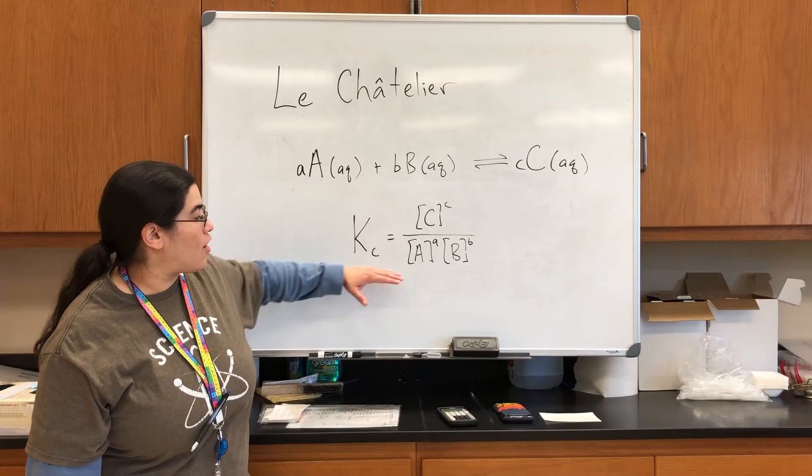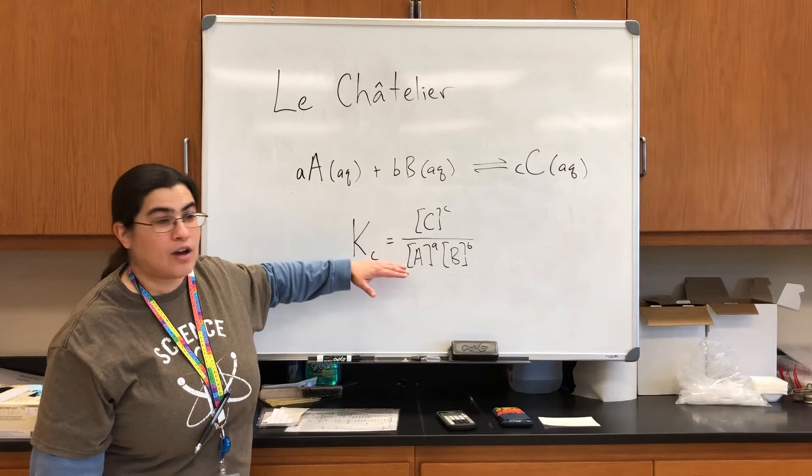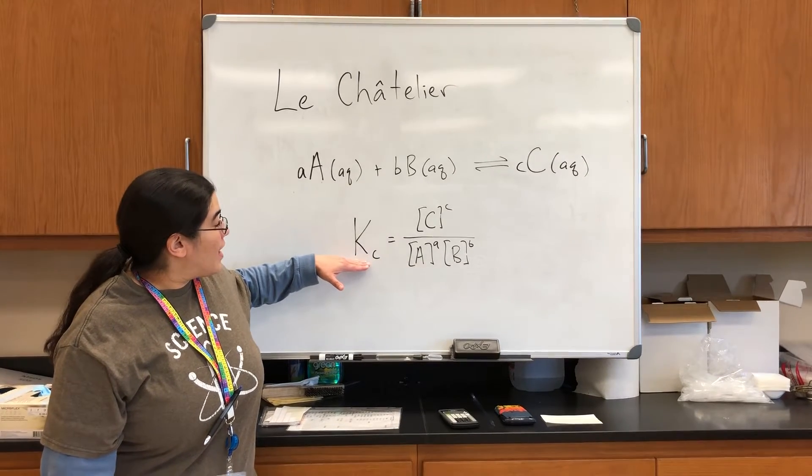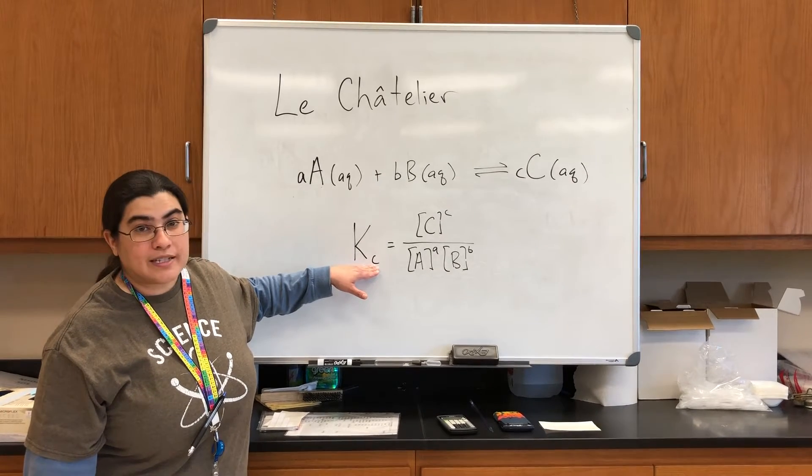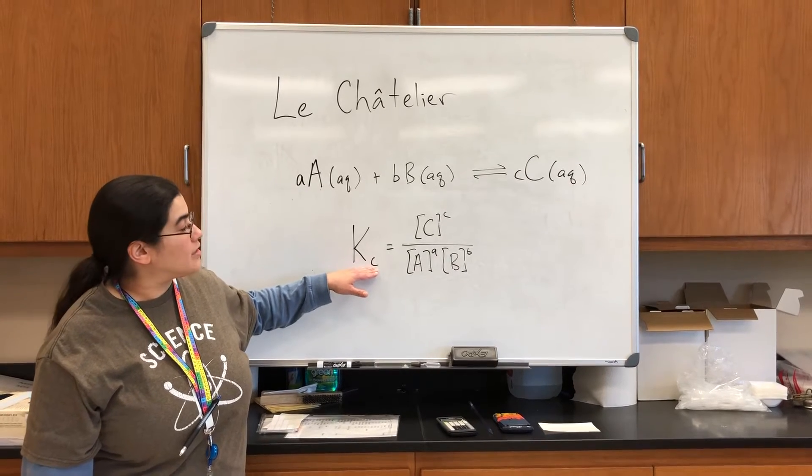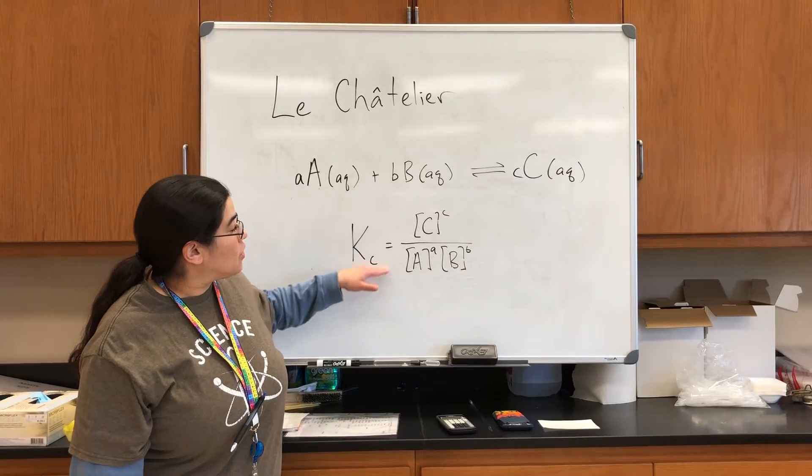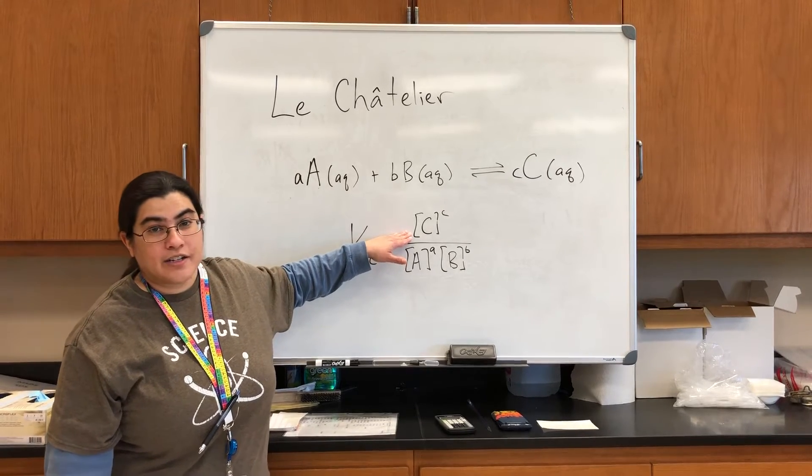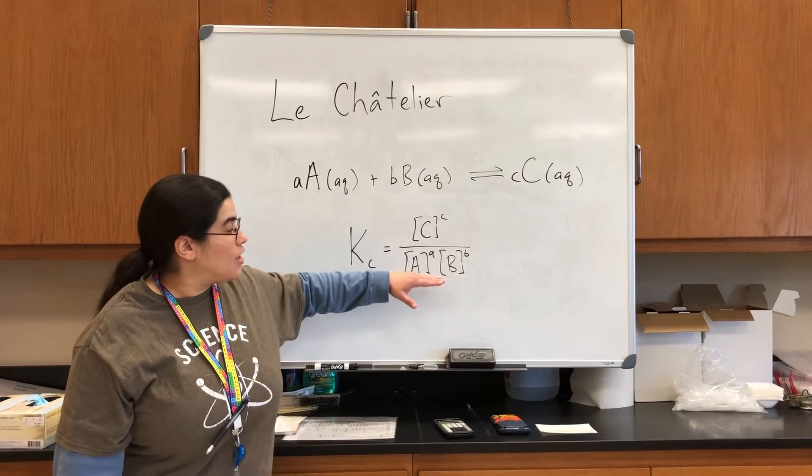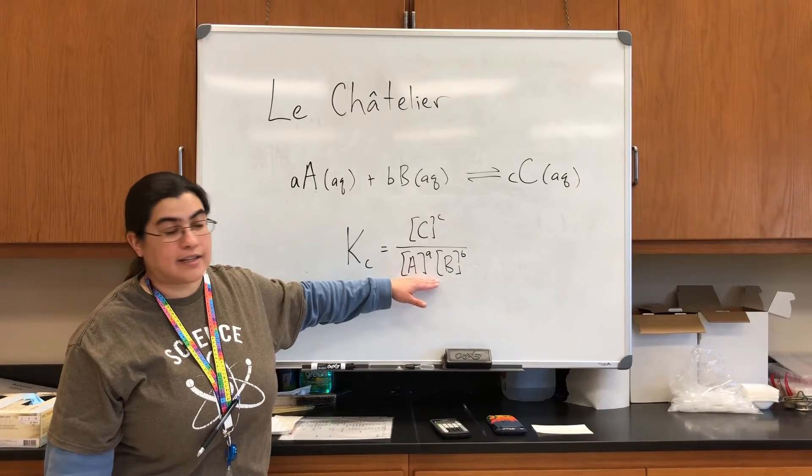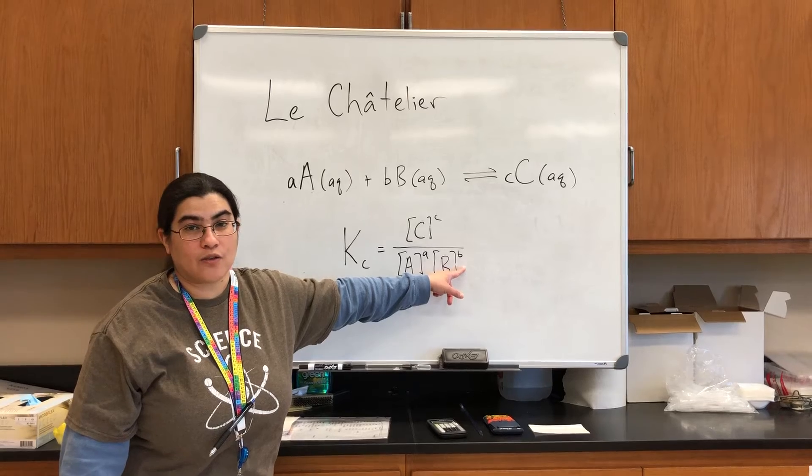Where you have your equilibrium constant K, and we're going to subscript it C to indicate that we're working with concentrations. And so you have your concentration of your product raised to its stoichiometric coefficient over the concentrations of your reactants, each raised to their stoichiometric coefficients.